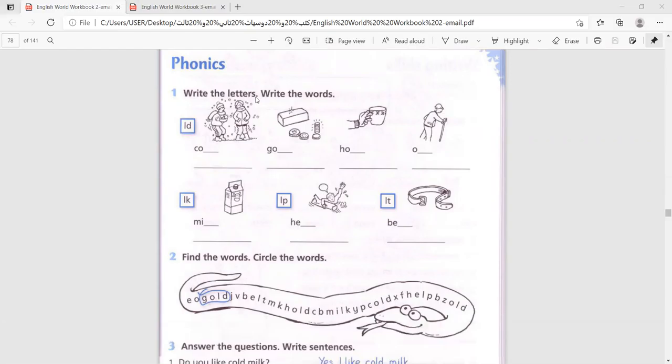77, we did the phonics words. We're doing cold, gold, hold, and old. And of course write the word again in the space.